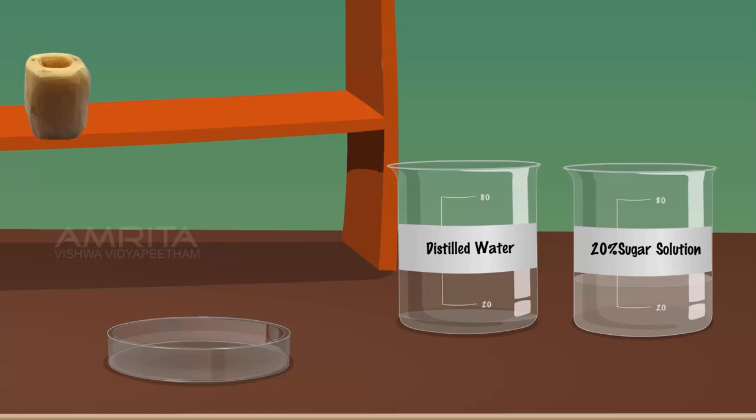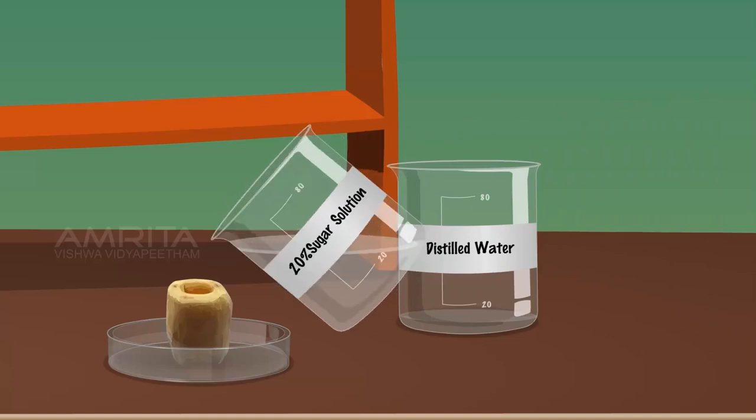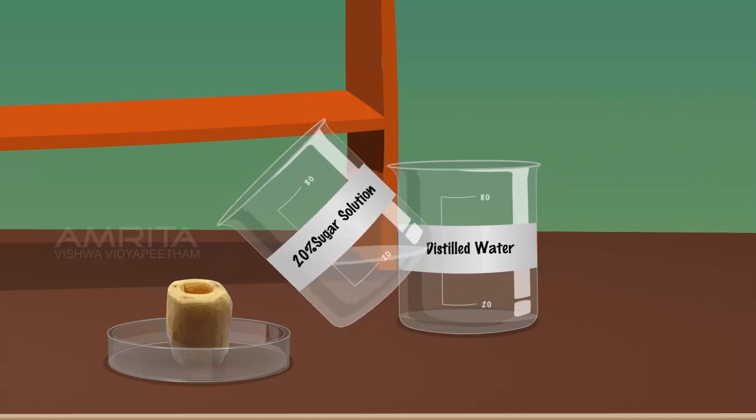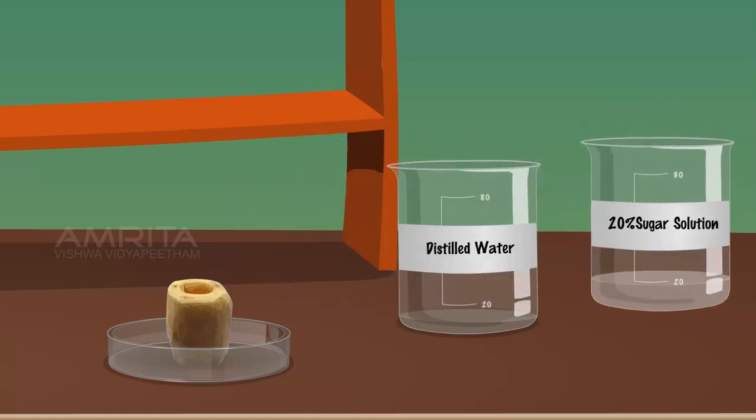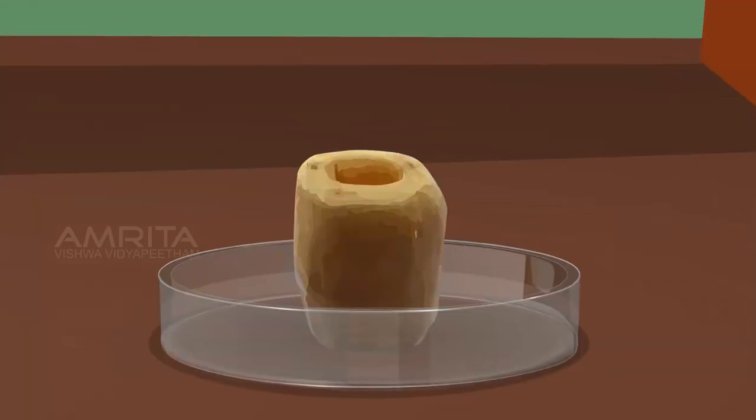Now, place the potato in the petri dish that is half full of water. Take the beaker containing sugar solution and fill half of the cavity of the potato with 20% sugar solution. Take a pin and mark the level of sugar solution in the cavity.